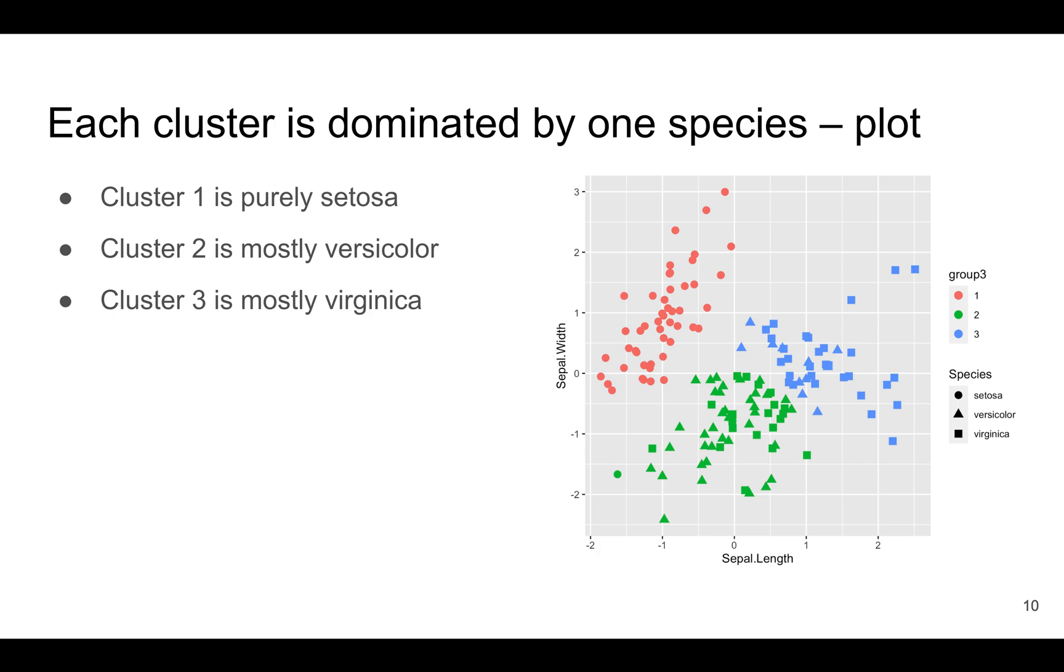If you plot the results, you'll see that cluster one is almost completely setosa, although one unusual setosa flower got grouped into the second cluster, which is versicolor.